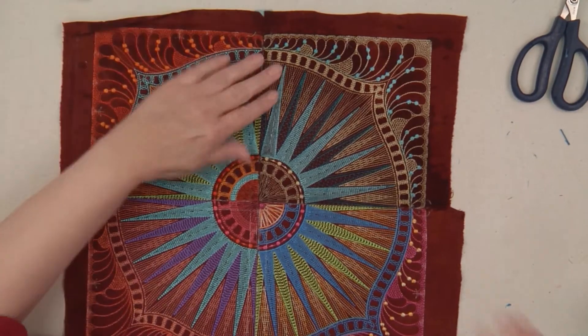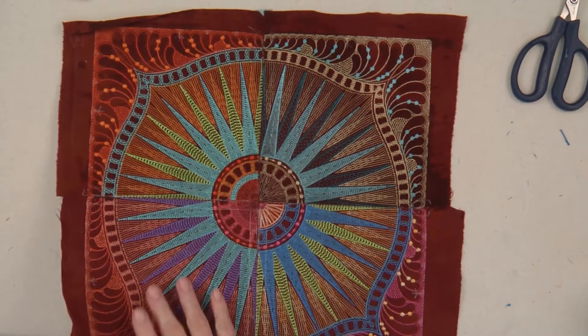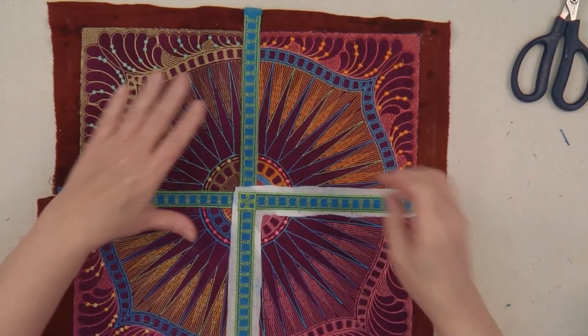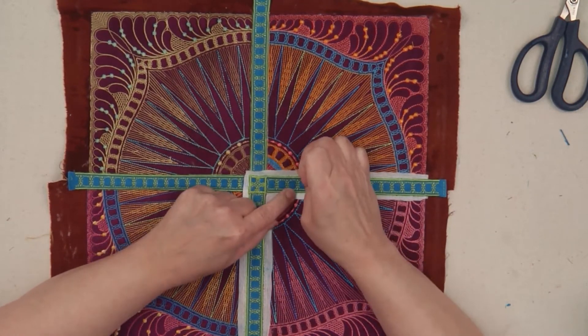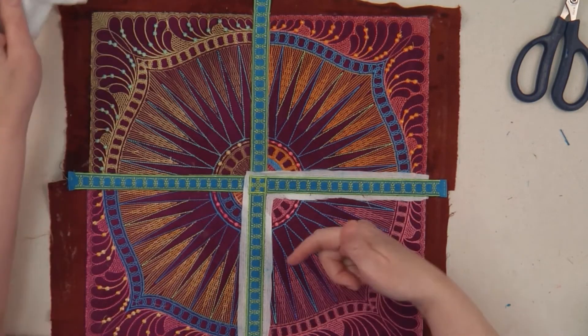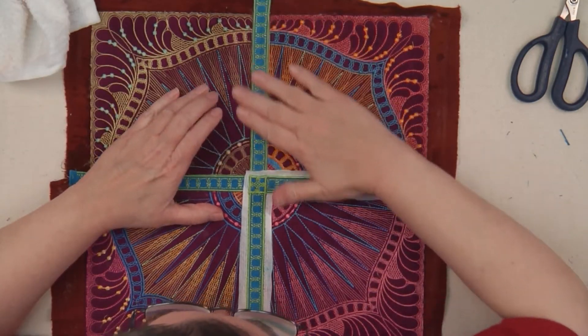But what you also want to do is turn it over and do it from the back side. Now we have some water-soluble thread right here and stabilizer. That also can be done in the same way.